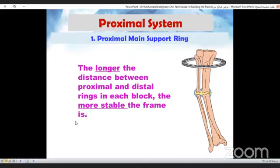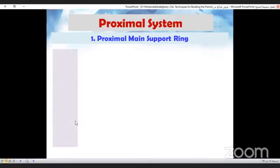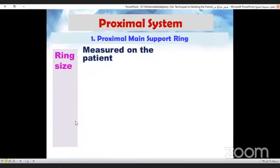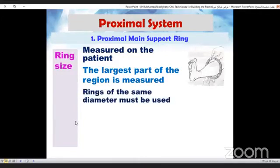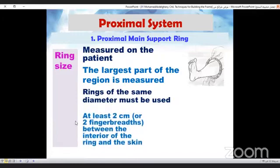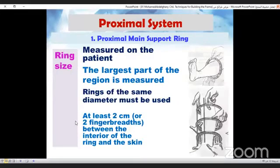The longer the distance between the proximal and distal rings in each block, the more stable the frame is. Now, how to measure the ring size. The ring is measured on the patient. We measure the largest portion of the region and we must use rings of the same size. At least two finger breadth of space should be left between the interior of the ring and the skin.